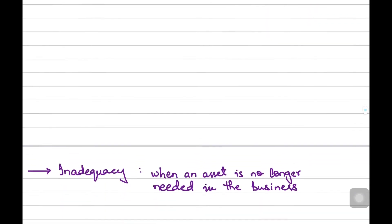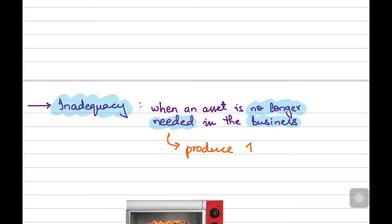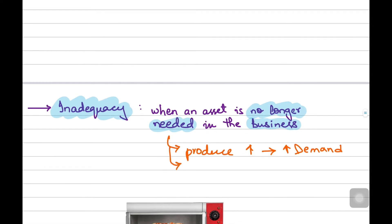Now, let's move towards the next thing that also comes under economic factors, and that is inadequacy. Inadequacy simply means that an asset is no longer needed in the business. This can happen because, for instance, the business now wants to produce more because there is an increase in demand, but it cannot do that if it still employs the same non-current assets. In simple words, it doesn't have the capacity to produce more by using the same non-current asset.